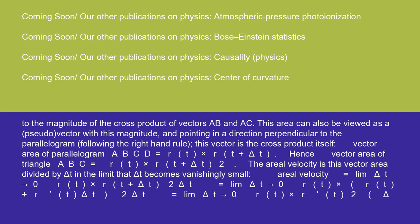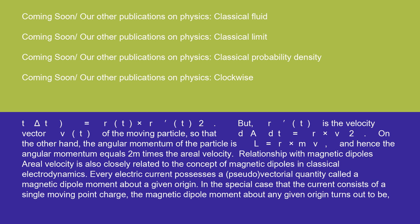Aerial velocity equals lim delta t → 0 [r × r(t + delta t)] / (2 delta t) equals lim delta t → 0 [r(t) × r(t + delta t)] / delta t equals [r(t) × r'(t)] / 2. But r'(t) is the velocity vector v(t) of the moving particle, so that dA/dt equals r × v / 2. On the other hand, the angular momentum of the particle is L equals r × mv, and hence the angular momentum equals 2m times the aerial velocity.